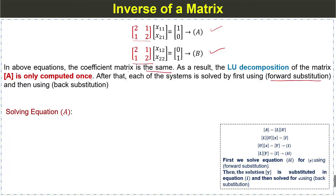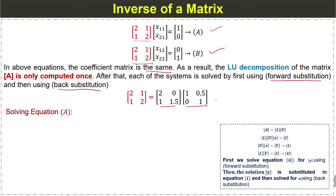After that, each system is solved by first using forward substitution and then backward substitution. First, we decompose the coefficient matrix A into the lower triangular matrix L and the upper triangular matrix U by applying Crout's LU decomposition. You can decompose this matrix using any method: the Doolittle method, Crout method, or Cholesky method.